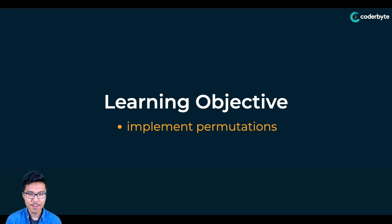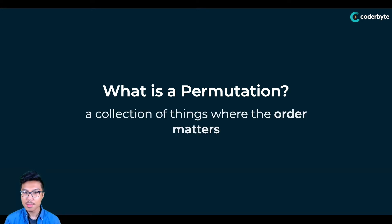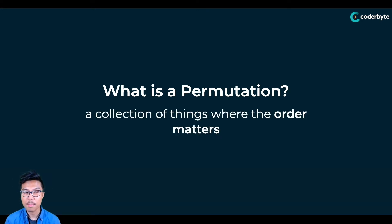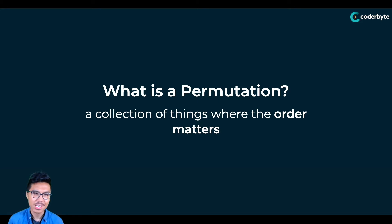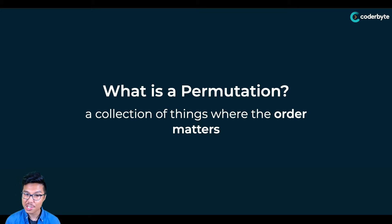So let's start with a very simple definition. What actually is a permutation? A permutation is going to be a collection of items where the order matters. This is kind of just like the opposite of combinations — with combinations, a combination is a collection where the order does not matter. In a permutation, it definitely does matter. So let's look at an example to make sense of this.